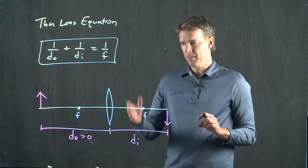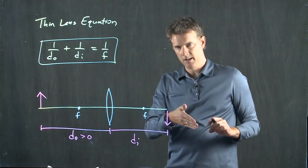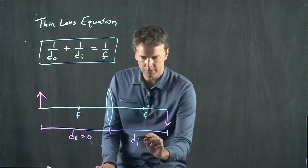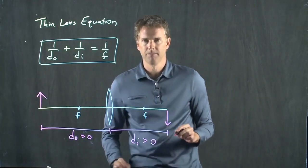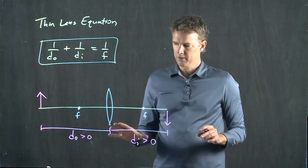And in the case of a mirror, remember, it was positive to the left and negative to the right. But for a lens, this is also positive. So all the numbers in this picture are positive.